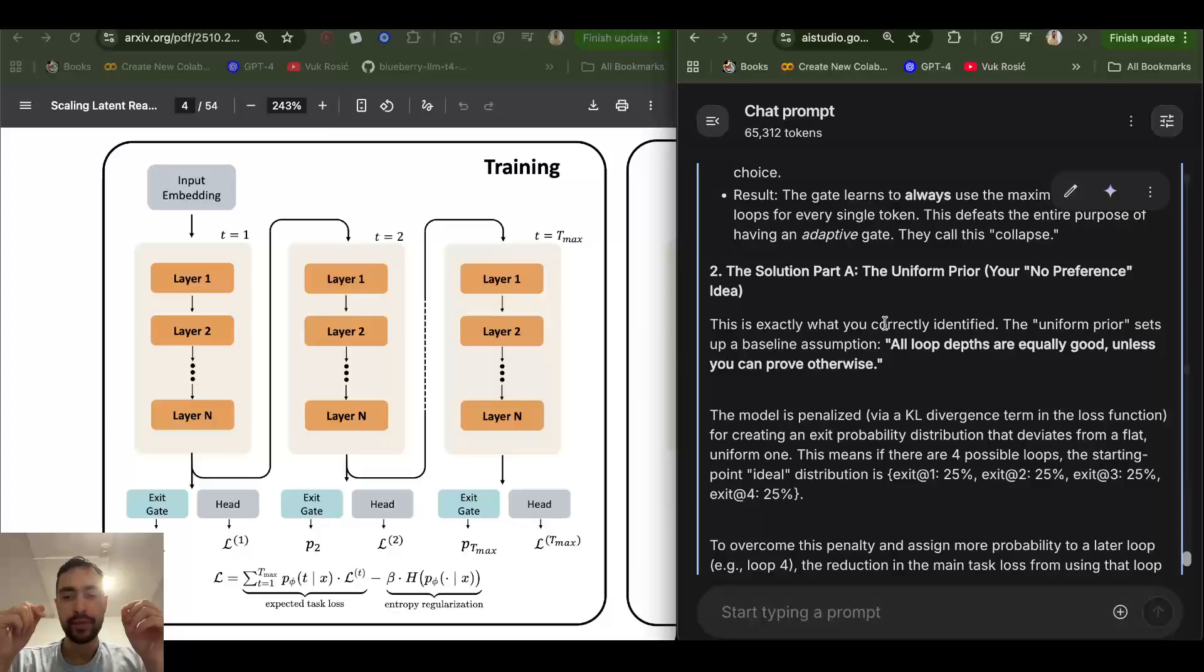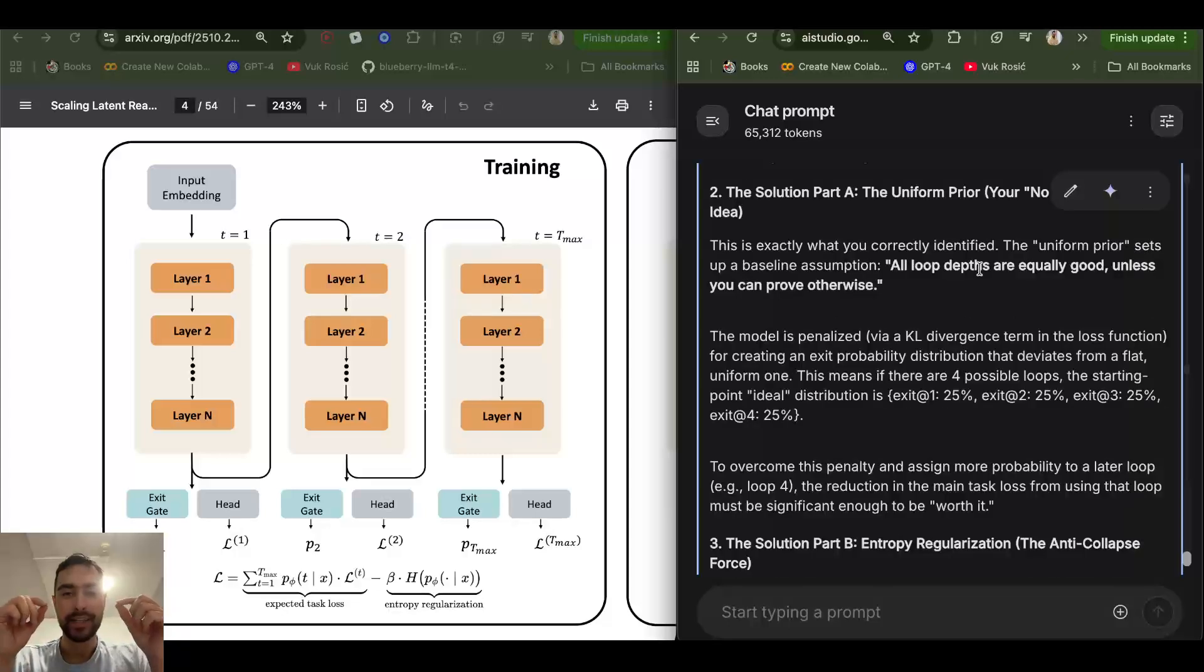But a large language model doesn't care and doesn't know about more compute. Its only objective is to just make the best possible token. So how do we deal with this? Because we don't want to waste putting so much compute but get diminishing returns on improvement of the next token. They actually define this as collapse, where the model just learns to always choose the maximum amount of loops. So in the first stage of training, they want the model to keep all of the probabilities of every amount of loops kind of similar, while learning a little bit which ones are better.